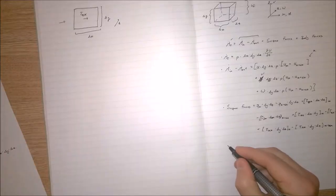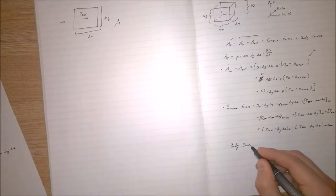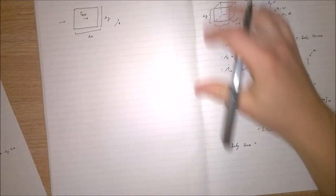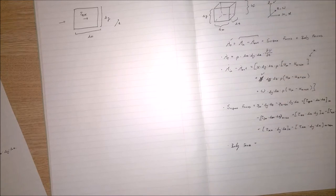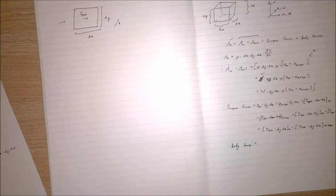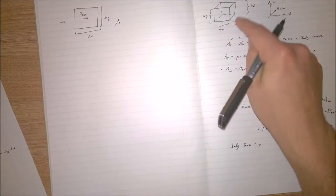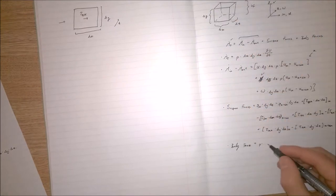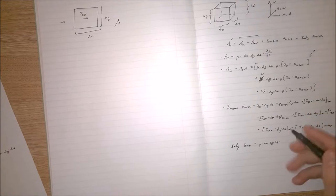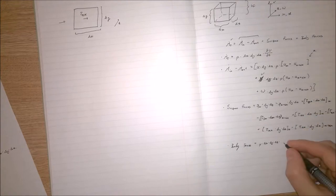And finally, our body forces will simply equal the mass of the fluid multiplied by the acceleration at which it's being applied — i.e. gravity or the magnitude of the electromagnetic force, or whatever's being applied to it. So it's going to be the density multiplied by the volume dx·dy·dz, multiplied by whatever the acceleration is in that direction, which we'll denote as g_x.